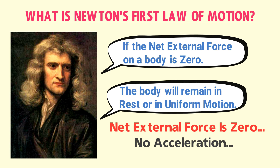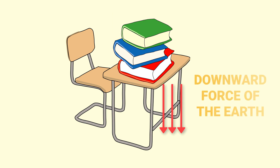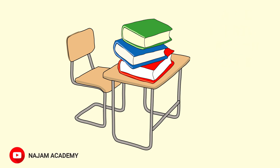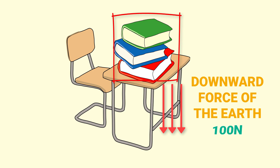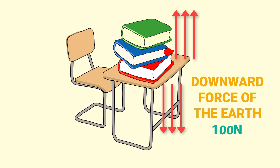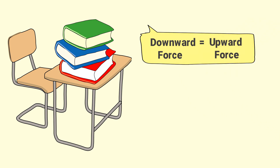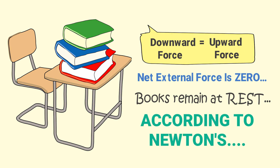Let me teach you a very simple application of Newton's First Law of Motion. Let's consider that there are few books on the table. These books experience a downward force of gravity from the earth. At the same time, the table exerts an upward force or normal force on these books. If the downward force of the earth on these books is 100 N, then the upward normal force of the table on these books is also 100 N. Hence, the net external force on these books is zero, and these books remain at rest according to Newton's First Law of Motion.